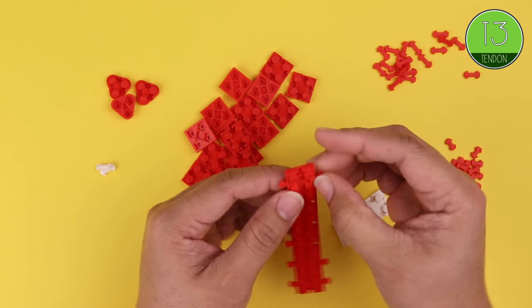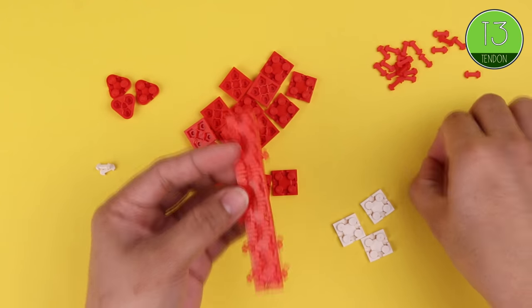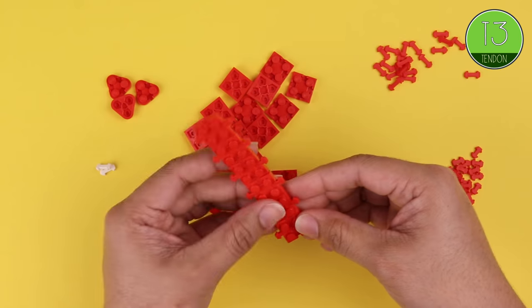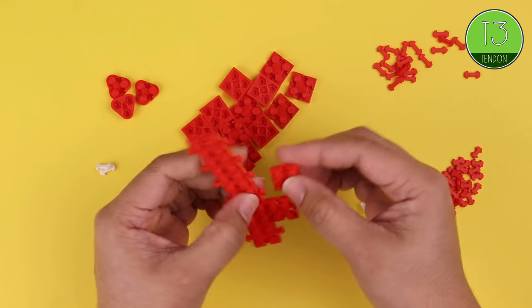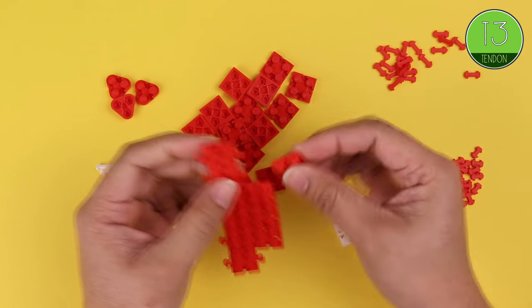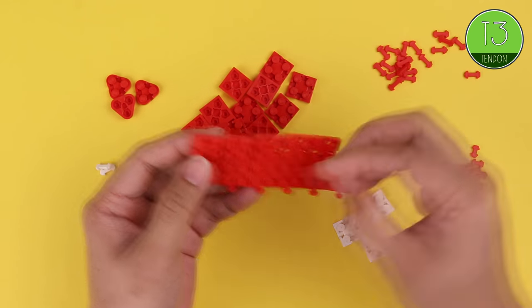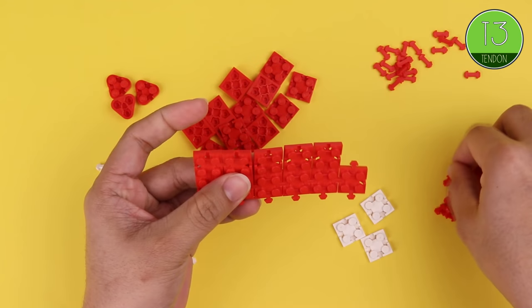So as you build along adding your squares and adding your T3s, don't forget to go back and fill in the gaps between them. We want this to be a nice sturdy stocking.